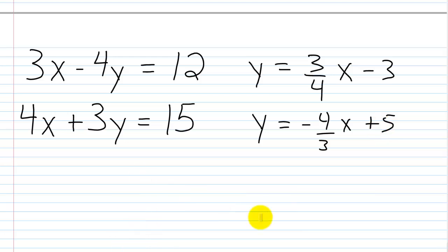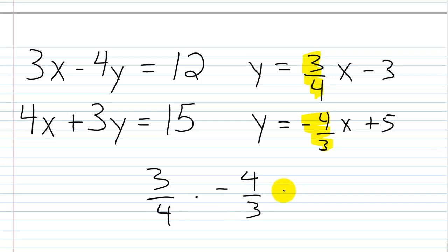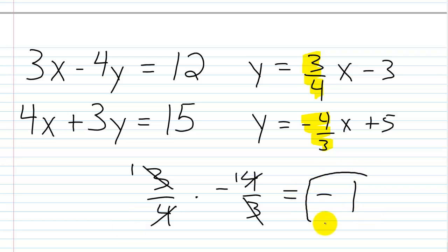Now let's look at the slopes. Are these lines parallel? The slopes are not the same, so they're not parallel. Are they perpendicular? We need to multiply the slopes together and see if it equals negative 1. So 3/4 times negative 4/3: positive times negative is negative, the 3s cancel, and the 4s cancel, leaving 1 times 1 which is 1. Since it was positive times negative, the final answer is negative 1. So these lines are perpendicular, because when we multiply the slopes together we get negative 1.